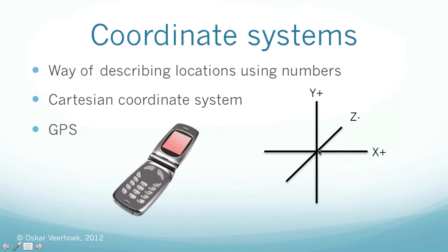The further you go to the right, the more the x value increases, so this could be 10, 0, 0. The further you go upwards, the more the y value increases, so this here could be 0, 10, 0.